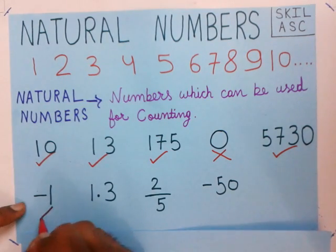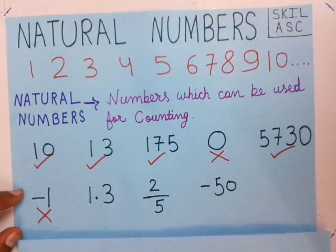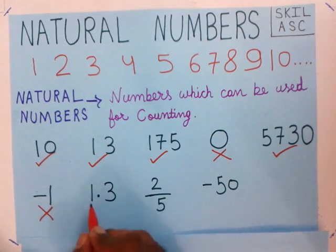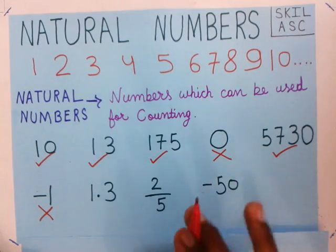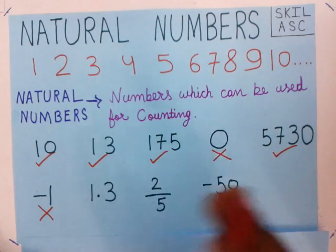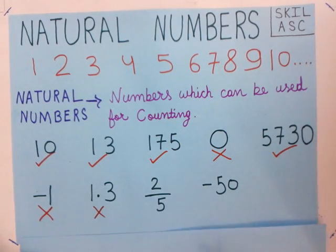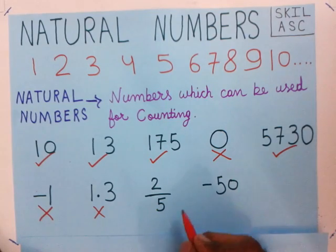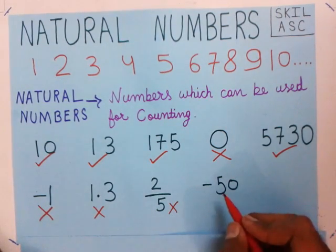Minus one is a negative number, so it is not a natural number — we cross it out. Next, consider 1.3 — this is a number with a decimal point in it. We don't use numbers with a decimal point while counting, so 1.3 is not a natural number. Similarly, 2/5 — we don't use fractions while counting, so 2/5 is not a natural number either.